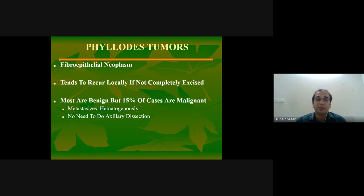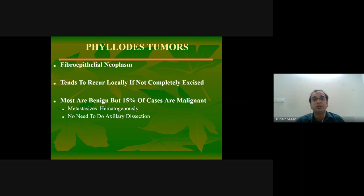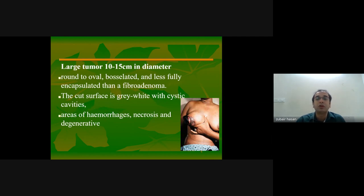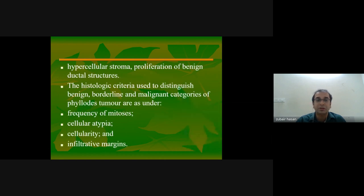Phyllodes tumor is a fibroepithelial neoplasm that tends to recur locally if not completely excised. Most are benign but 15 percent of cases are malignant and can metastasize. Phyllodes is a category with benign, borderline, and malignant subtypes. If it becomes malignant it is called a sarcoma and spreads hematogenously. It is a large tumor with a leaf-like pattern, oval lobulated, less fully encapsulated than fibroadenoma, with gray-white cystic areas showing hemorrhage, necrosis, and degeneration.